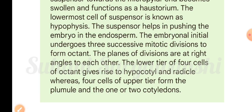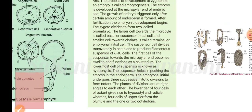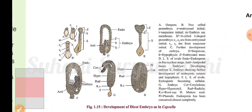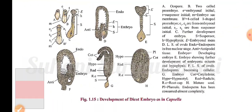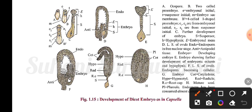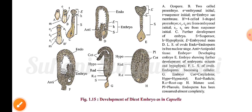The lowermost cell of the suspensor is known as hypophysis. The suspensor helps in pushing the embryo into the endosperm. The embryonal initial undergoes three successive mitotic divisions to form the octant. The planes of division are at right angles to each other. The lower tier of four cells of the octant gives rise to the hypocotyl and radicle, whereas the four cells of the upper tier form the plumule and one or two cotyledons. A diagram should be drawn and labeled accordingly.